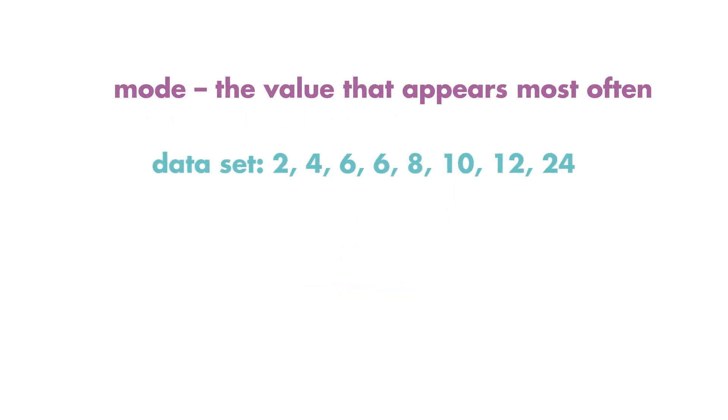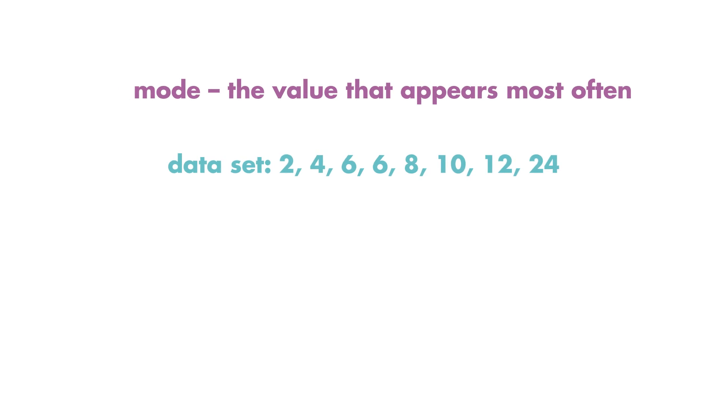The mode is the value that appears most often. A data set can have more than one mode. Since the number 6 appears twice, the mode is 6.